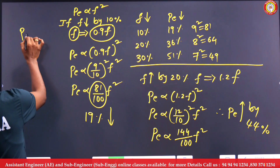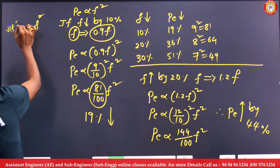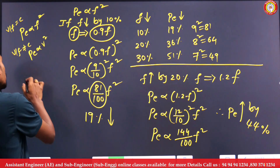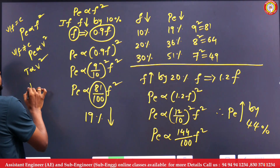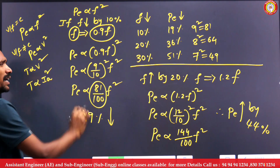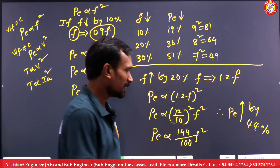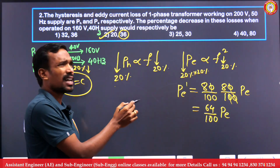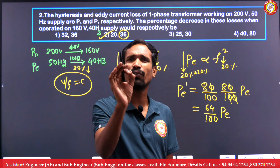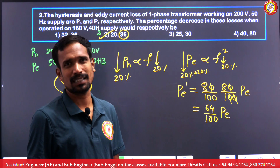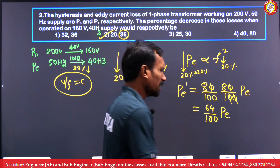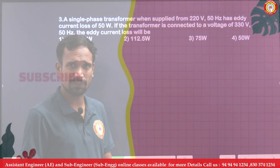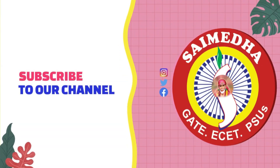Not only eddy current losses — eddy current loss is directly proportional to f² when V/f is constant. If V/f is not constant, eddy current loss is proportional to V². Similarly, in induction motors torque is proportional to f², and in DC series motors torque is proportional to Ia². The answer approach is the same for all. For competitive exams, make a table for 10%, 20%, 30%, 40%, 50% changes so you can answer within seconds. I will discuss more questions on losses and efficiency in the next video. Thank you.